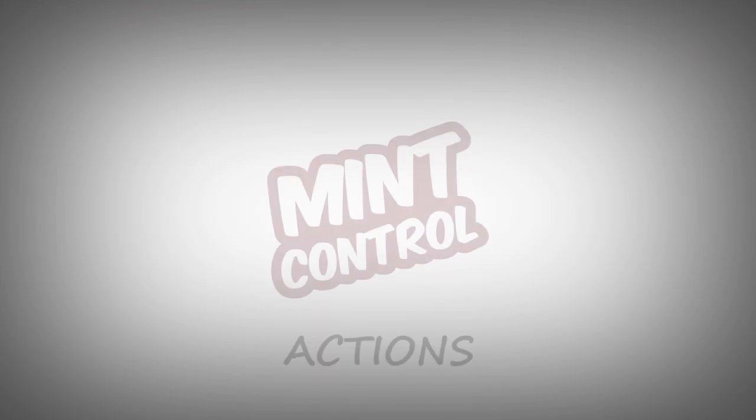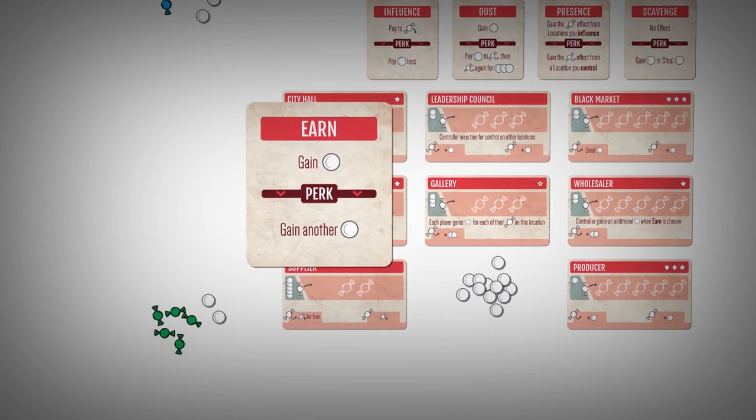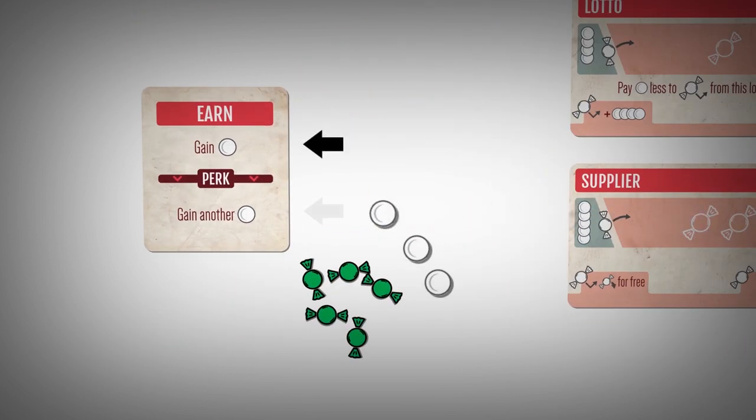Actions. The Earn action gives players mints to spend on future turns. The perk for selecting this action is to gain an additional mint.